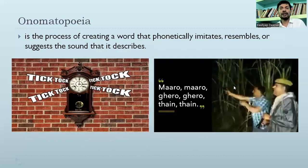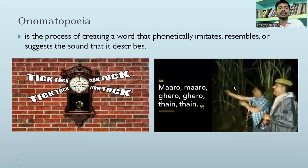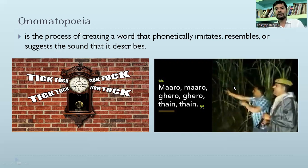Onomatopoeia is a process of creating words that phonetically imitate, resemble, or suggest the sound they describe. For example, a clock producing the sound 'tick-tock' — once we write it in a text, it is onomatopoeia. Similarly, a gun making the sound 'bang' written in text is also onomatopoeia.